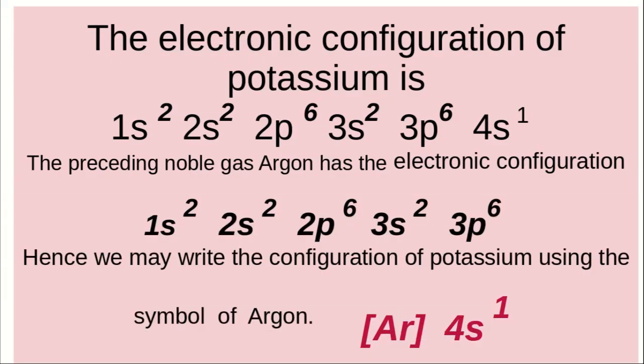We can write the electronic configuration of elements using the symbol of noble gases. While writing the subshell electronic configuration of elements with higher atomic numbers, the symbol of the noble gas preceding that element may be shown within square brackets, followed by the electronic configuration of the remaining subshells.